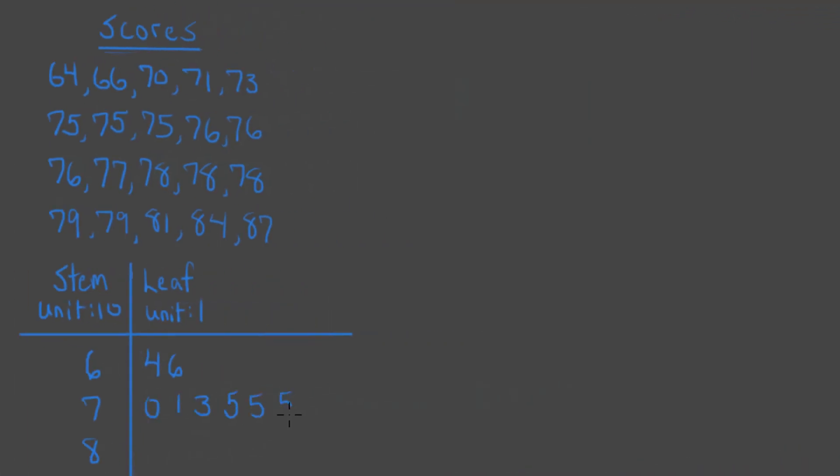Sometimes a regular stem and leaf display doesn't clearly show us the distribution of scores, because too many scores are clustered in certain stems. In this case, we might want to use what's called a stretched stem and leaf display. Here's a set of scores where a basic stem and leaf isn't very revealing. This stem and leaf tells us that most scores are in the 70s, but since there are so many scores in that stem and so few in the others, we don't have a clear sense of the spread of scores within that 70s stem.